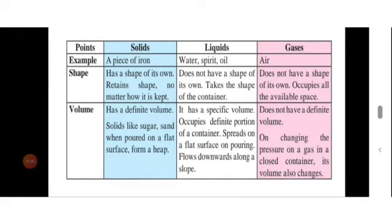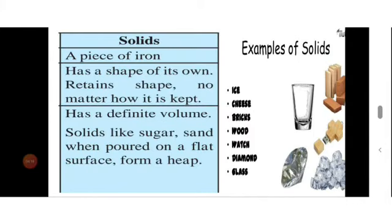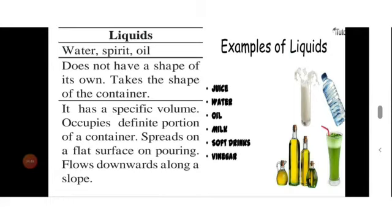Now let's learn the differences between states of substances. As we know, there are three states: solid, liquid, and gaseous. Students, copy down this chart in your notebook. First, we will see solid. Solid has a shape of its own, which is retained. Retain means to continue to hold. Solid has a definite volume.